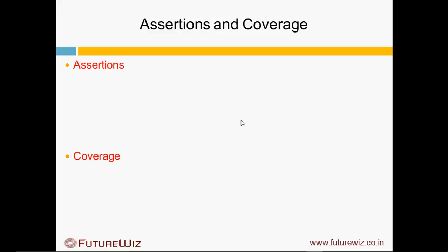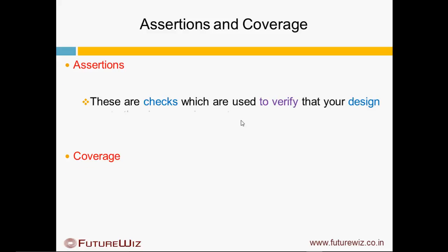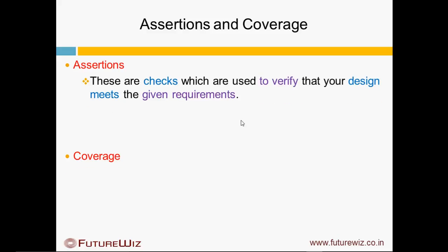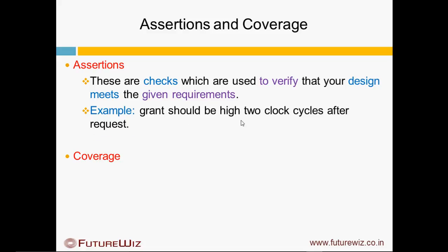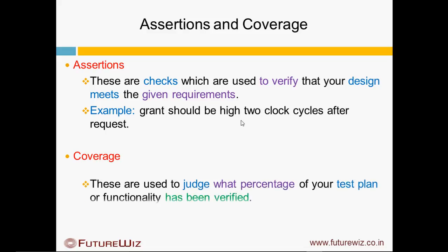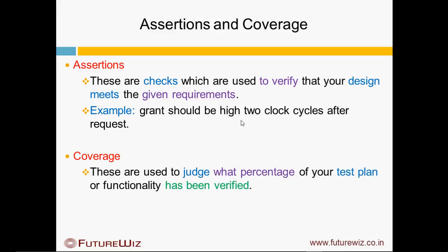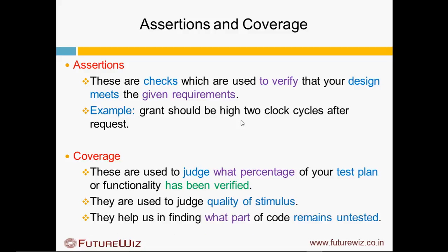System Verilog offers the concept of assertions and coverage. Assertions are used to check whether your design meets a given requirement — for example, grant should be high 2 clock cycles after the request. Coverage is used to judge what part of your test plan has been verified, to judge the quality of your stimulus, and to help find what part of the code remains untested.